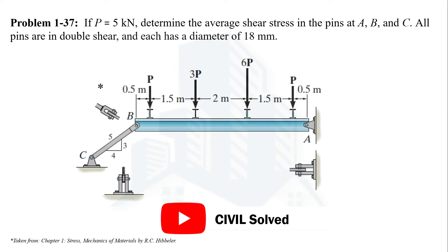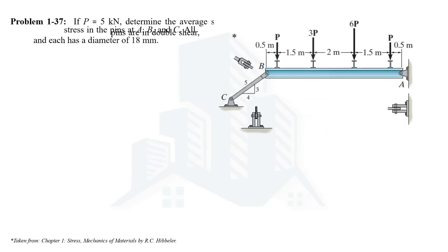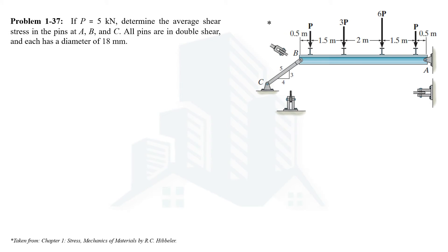Hello everyone. In this video we are going to solve example number 37 from the chapter on stresses in the book Mechanics of Materials by R.C. Hibbeler. In this example we are being asked to calculate the average shear stress in the pins at different locations, given the loading condition as shown in the image. Let's solve this example.